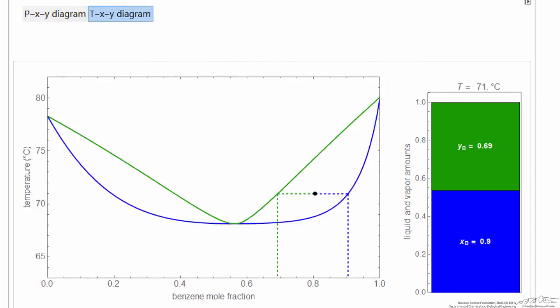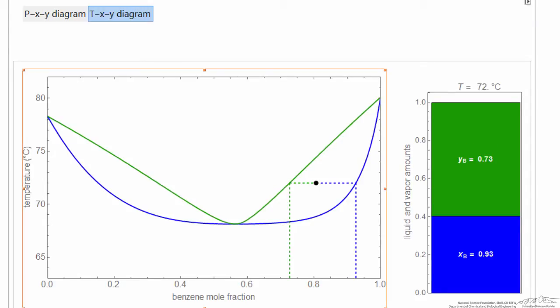Hopefully, this simulation and the ability to change the composition that you're looking at will allow you to get a better understanding of vapor-liquid equilibrium where we have non-ideal liquids so we have an azeotrope present.